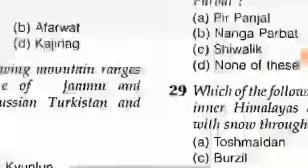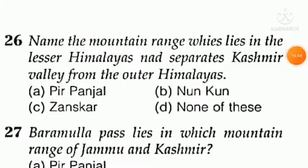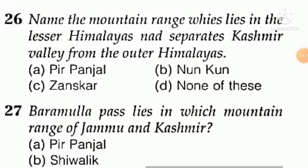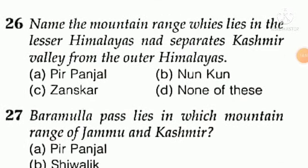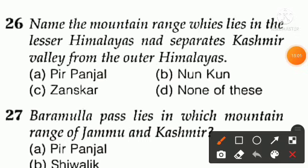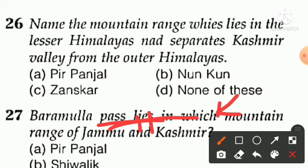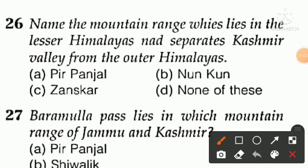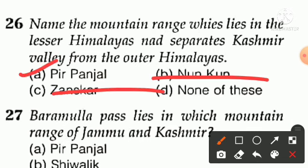Question number twenty-six: name the mountain range which lies in the lesser Himalayas and separates the Kashmir Valley from the outer Himalayas (Shivaliks). Option A — Pir Panjal, option B — Nunkun, option C — Zanskar, option D — none of the above. From a distance the answer is clear — Pir Panjal. Zanskar is not the answer, Nunkun is not the answer. Option A — Pir Panjal — separates Kashmir Valley from the outer Himalayas.